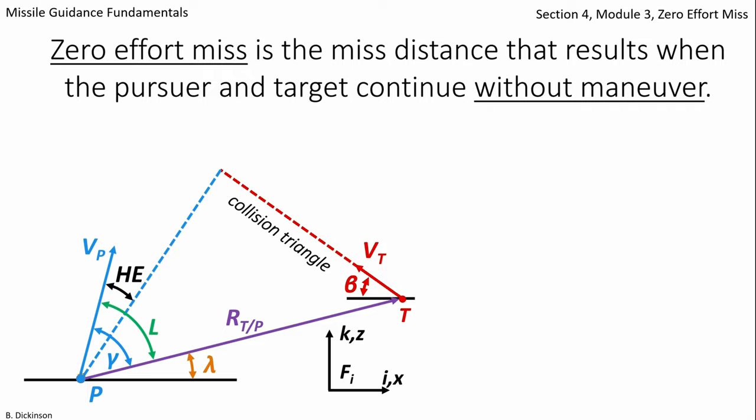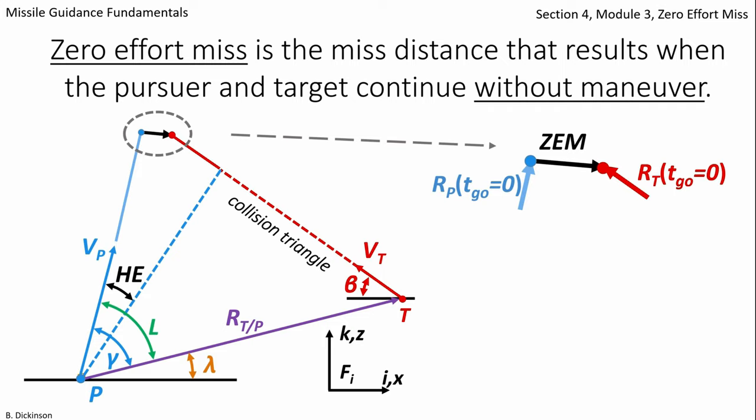From this present kinematic state, at a future point in time, there is a miss-distance vector. That miss-distance vector occurs at time-to-go equals zero, and is simply the relative separation between the pursuer and target, and also the zero effort miss vector.